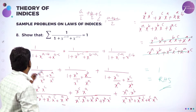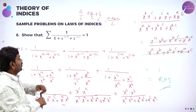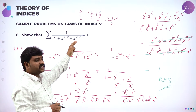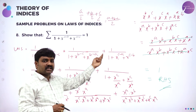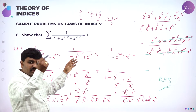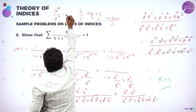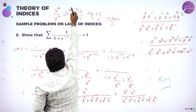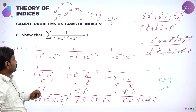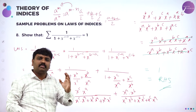I hope all of you understood. Sigma means cyclic summation. So a minus b, b minus c — the second term is b minus a, c minus a — and the third term is c minus a, c minus b. Then you know a^(m-n) can be written as a^m by a^n. So a minus b can be written as x^a by x^b, a minus c as x^a by x^c. Take LCM and simplify — you get the answer.